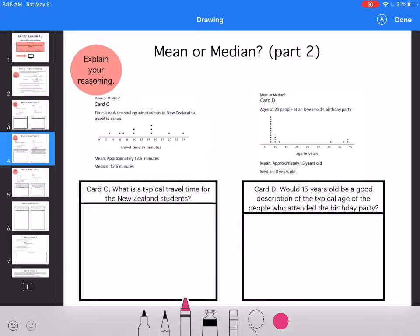What is the typical travel time for New Zealand students? 12.5 minutes or approximately 12.5 minutes? Well, 12.5 minutes means that all students take about 12.5 minutes, and that's not exactly true based on this graph. So I'm going to say the mean because it takes into account all travel times.